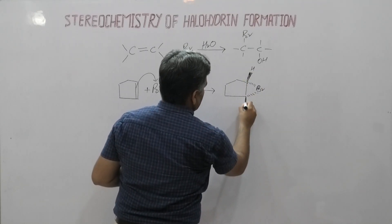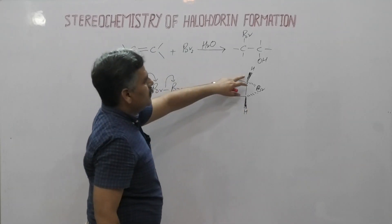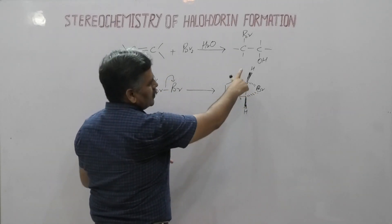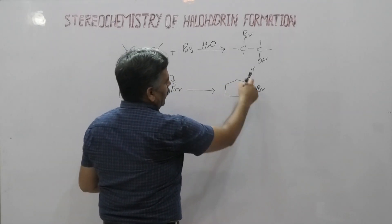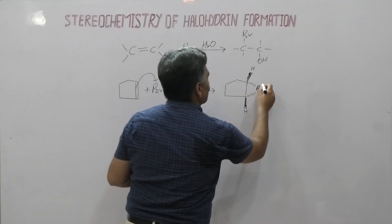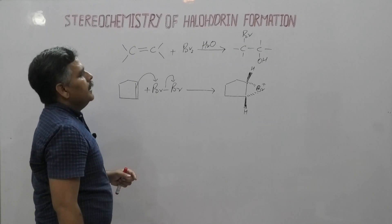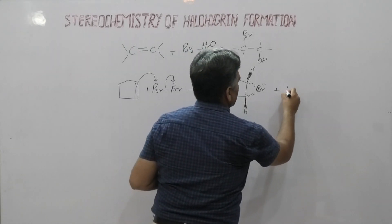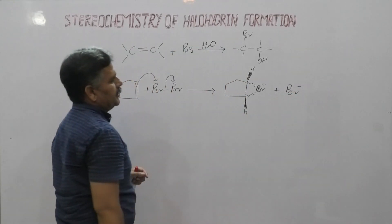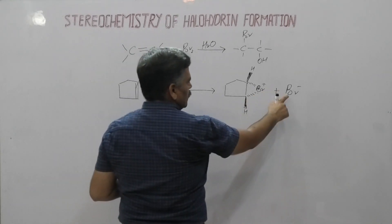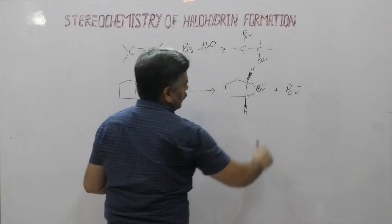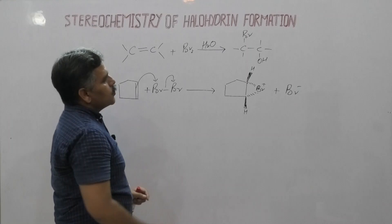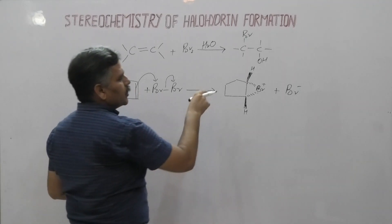To explain the stereochemistry, I show this hydrogen as wedge and this bromine as dotted. You can change the dotted and wedge, and in this way we can get one enantiomer of the product. This bromonium ion is formed as a result of attachment of this bromine at the carbon-carbon double bond. This reaction takes place in the presence of water, so the nucleophilicity of the bromide ion is decreased due to the presence of water. It means water actually attacks at this bromonium ion.